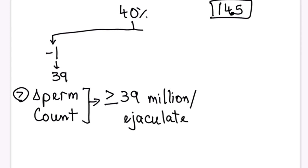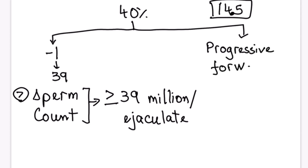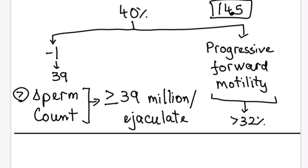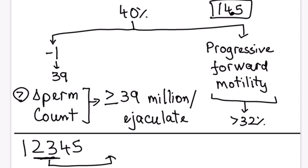Within total motility, we must also assess progressive forward motility. In our number 14.5, the missing digits from the sequence 1,2,3,4,5 are 2 and 3. If you invert 23, you get 32. So progressive forward motility, the eighth parameter, must be more than 32 percent.